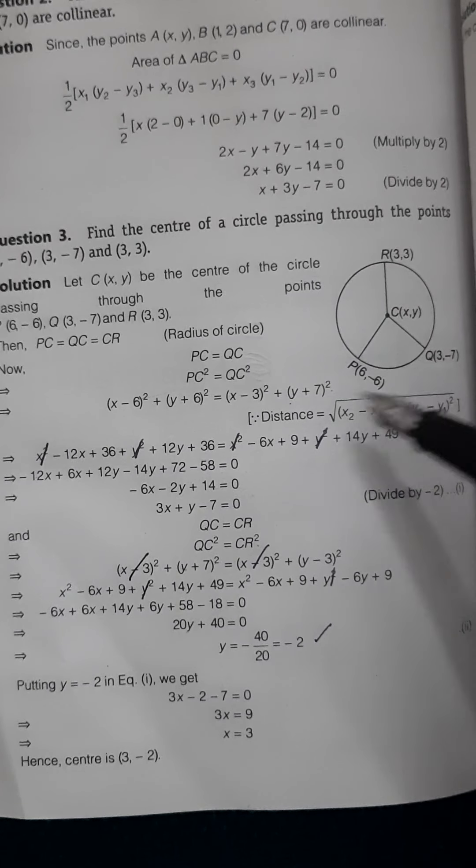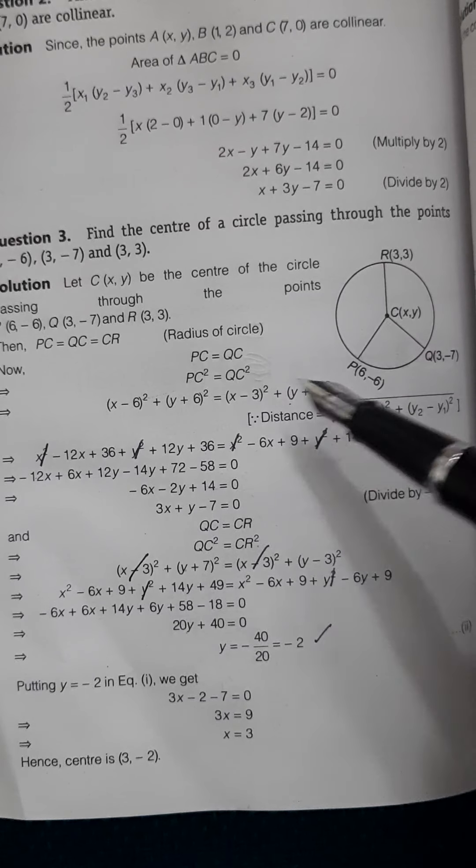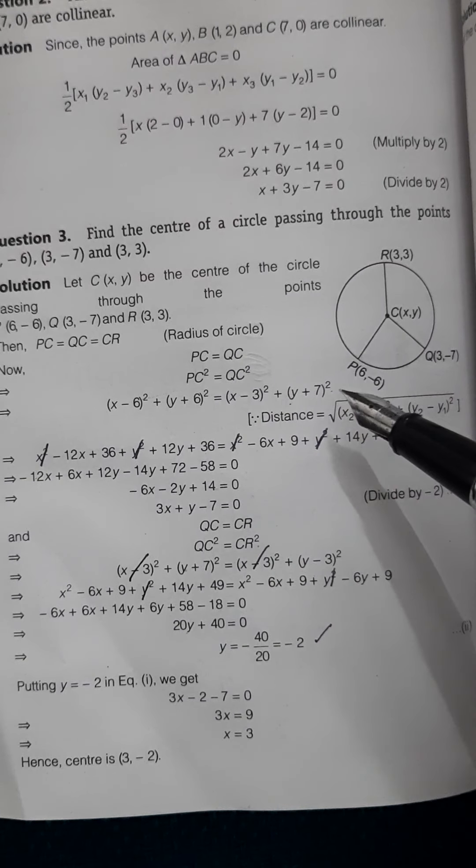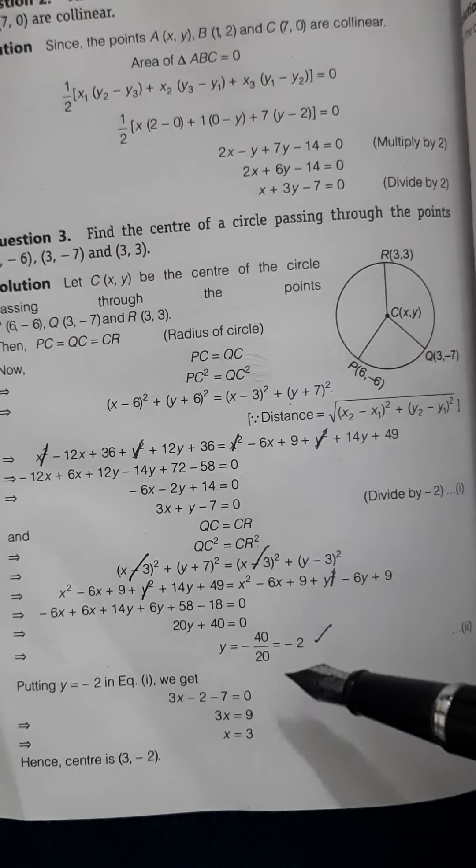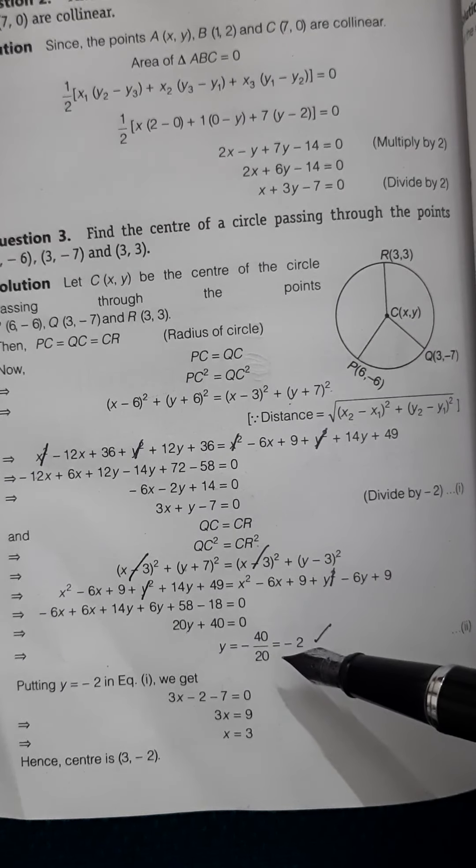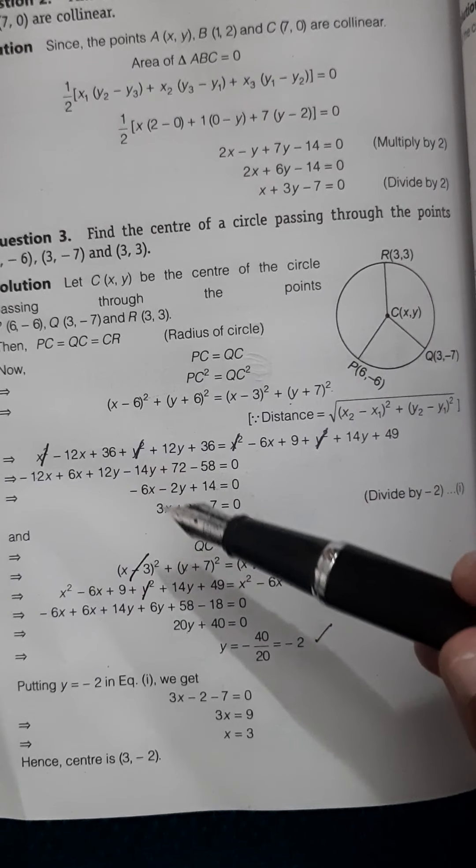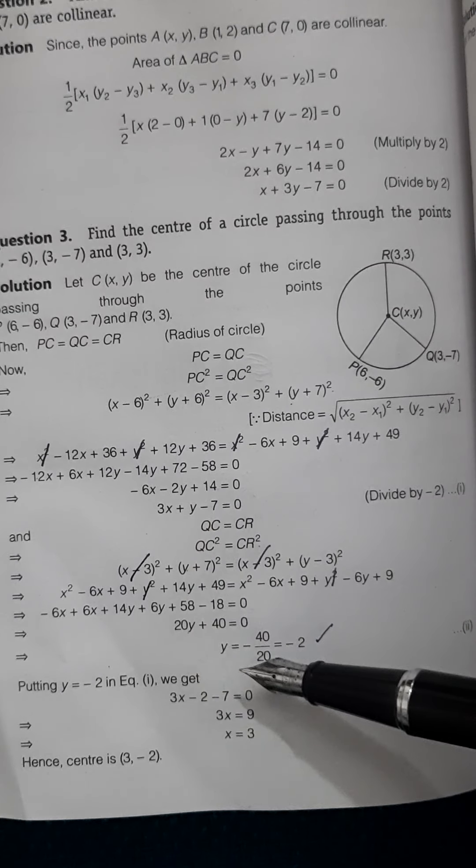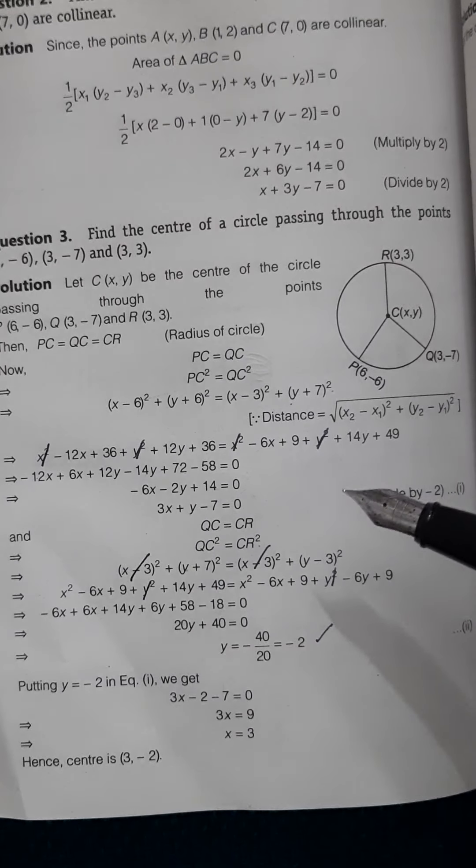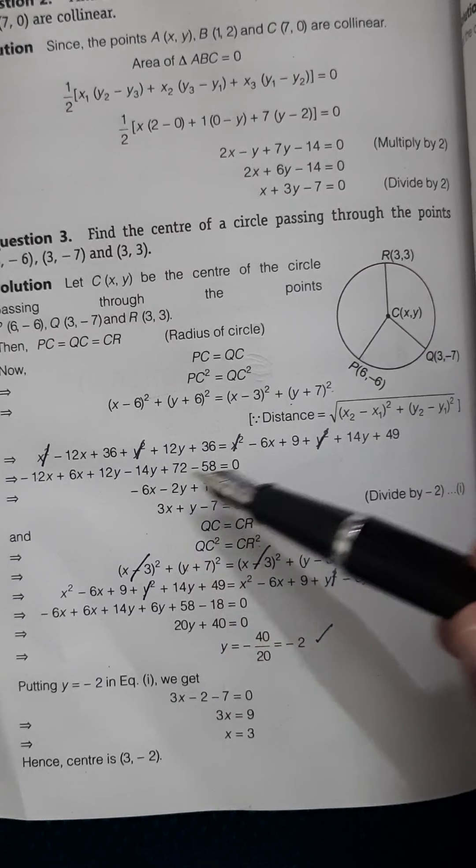Now when we open the brackets, x² and y² are going to get cancelled. What we can do is substitute the value of y that we got as -2 in the equation. When we put that value of y as -2, this is the equation that when you solve, you will get 3x + y - 7 = 0.